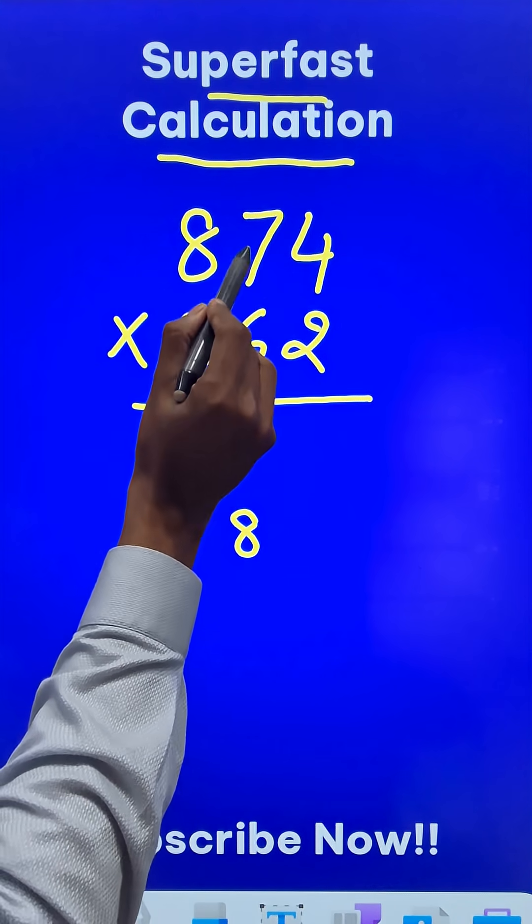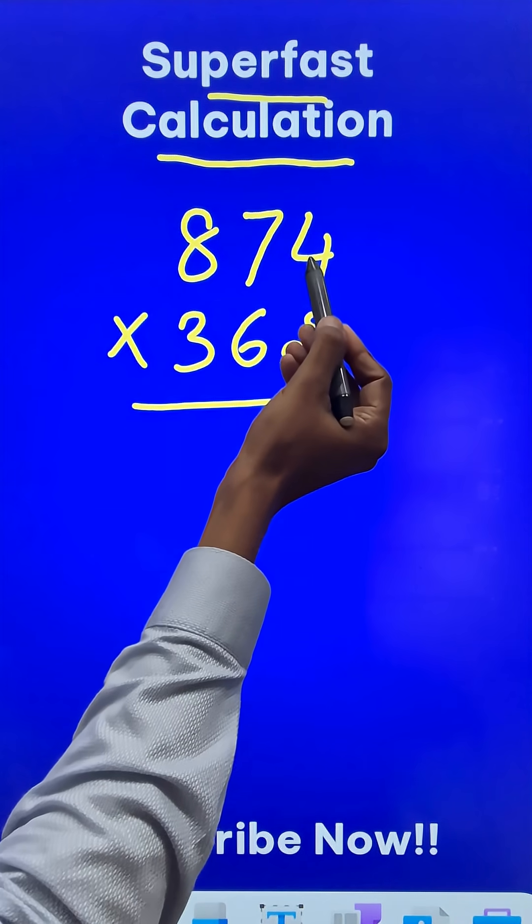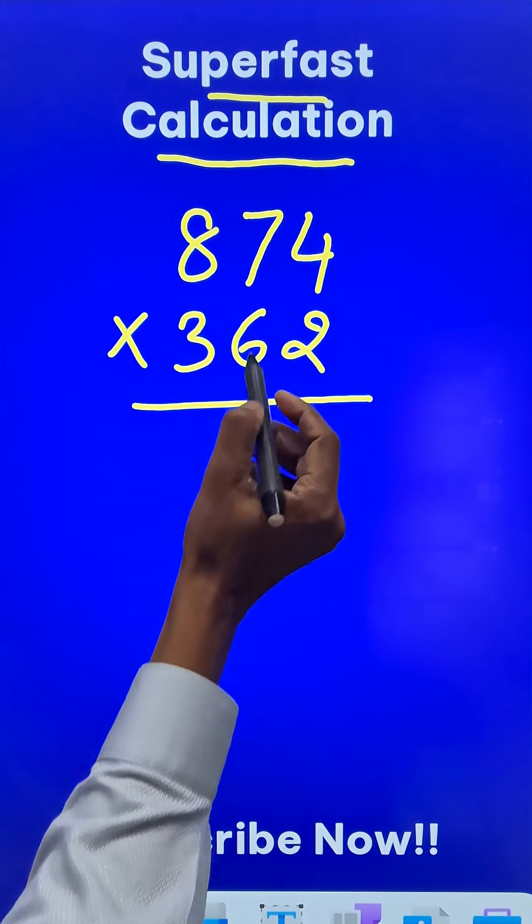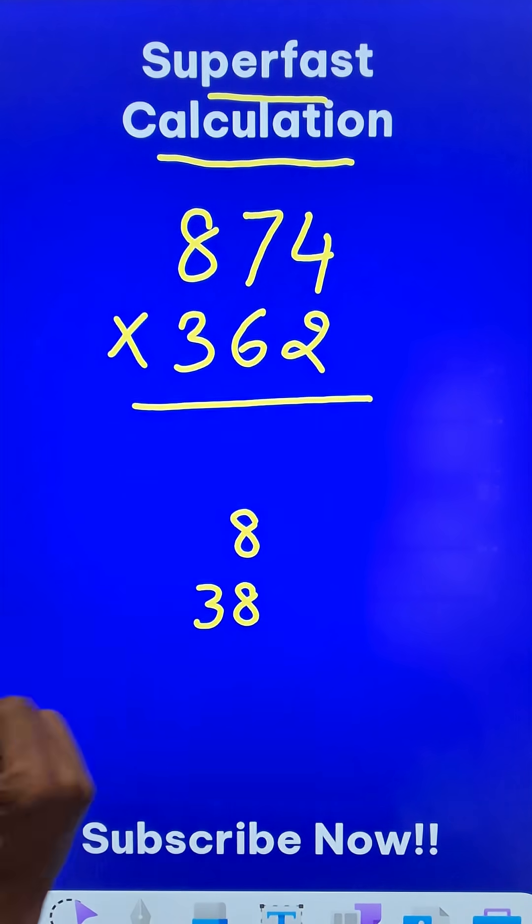Then cross multiply the last two pairs. 7 times 2 is 14, and 4 times 6 is 24. Add the two results: 14 plus 24 is 38. Write 38 below this.